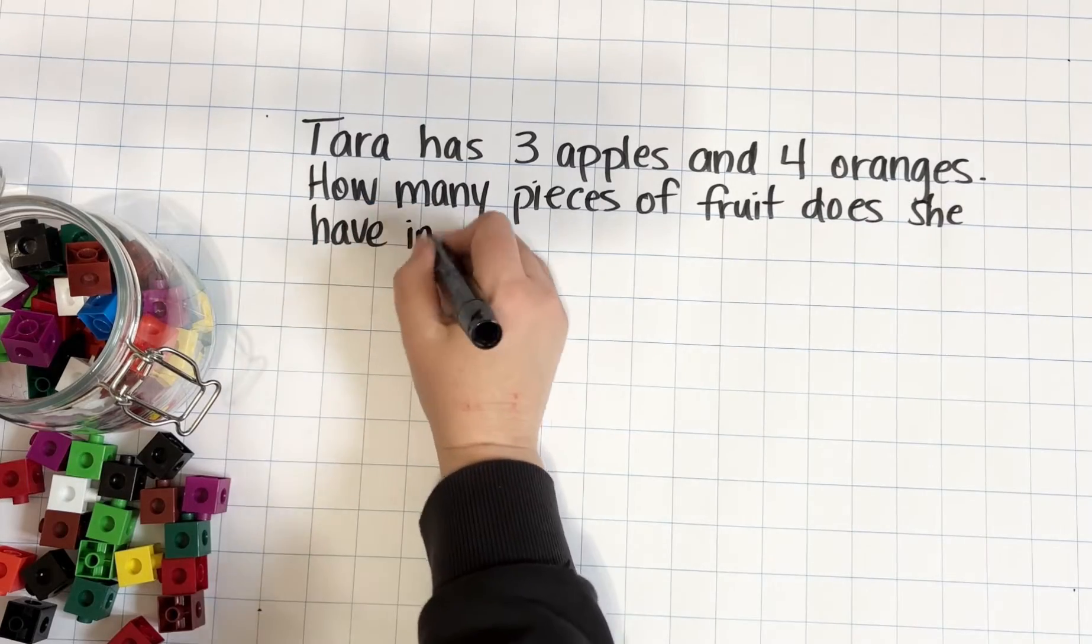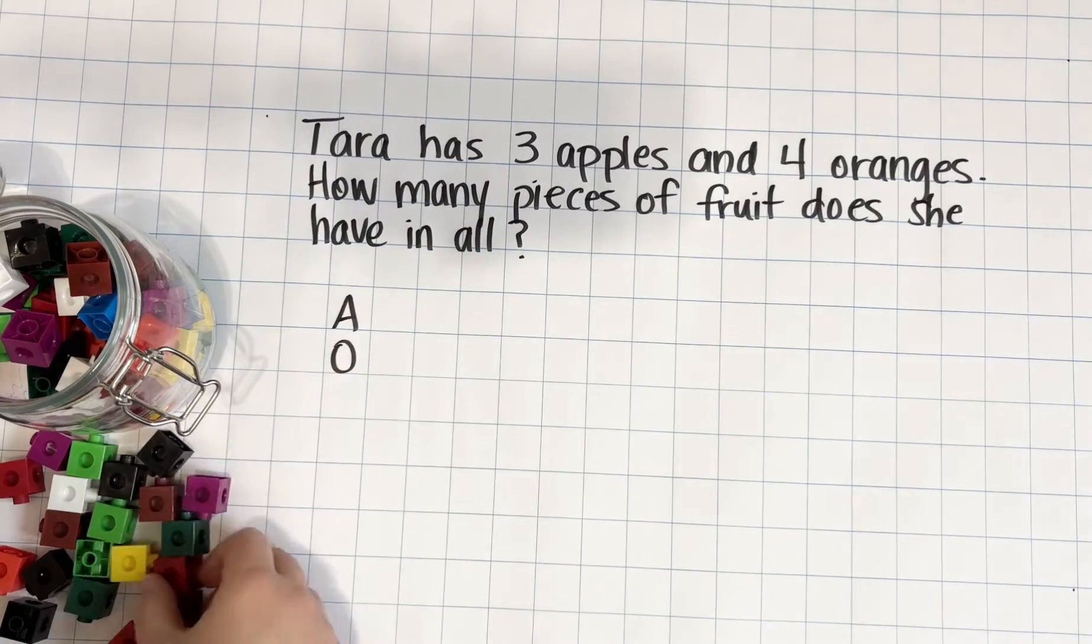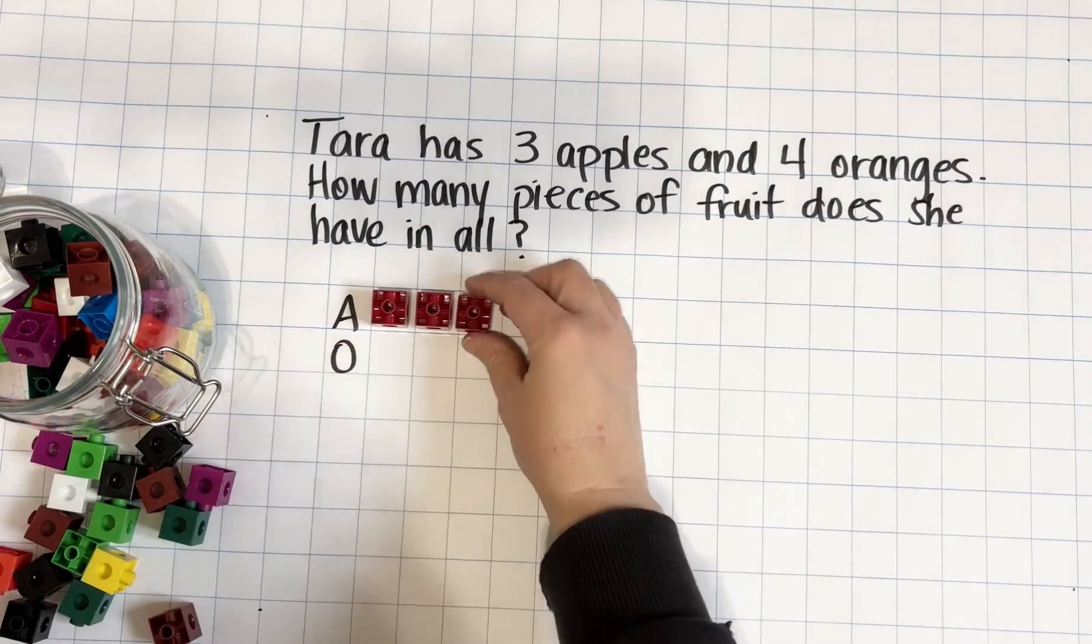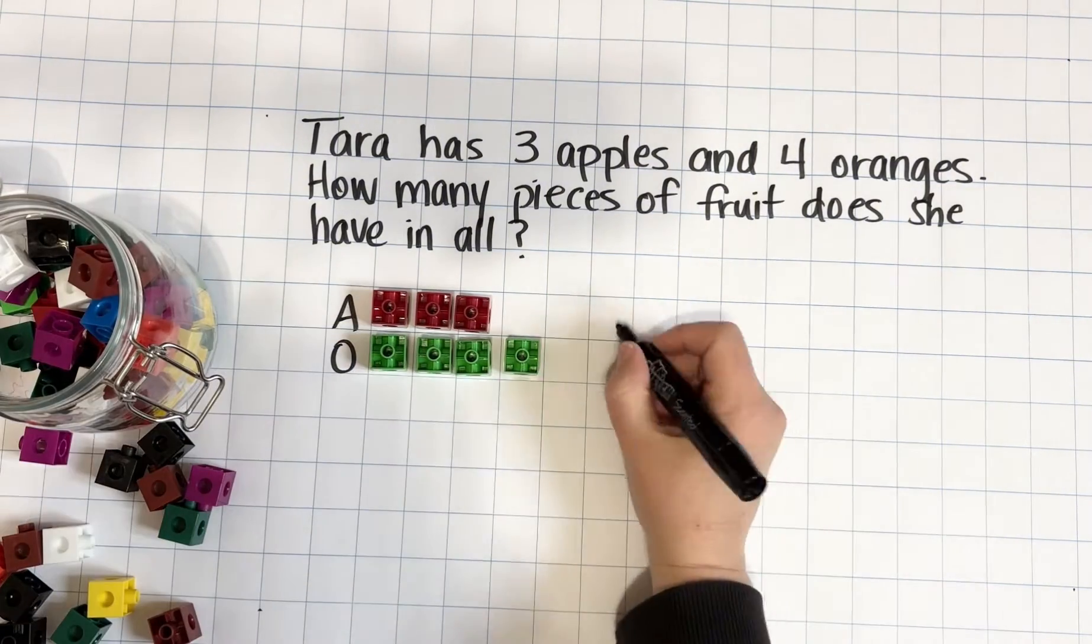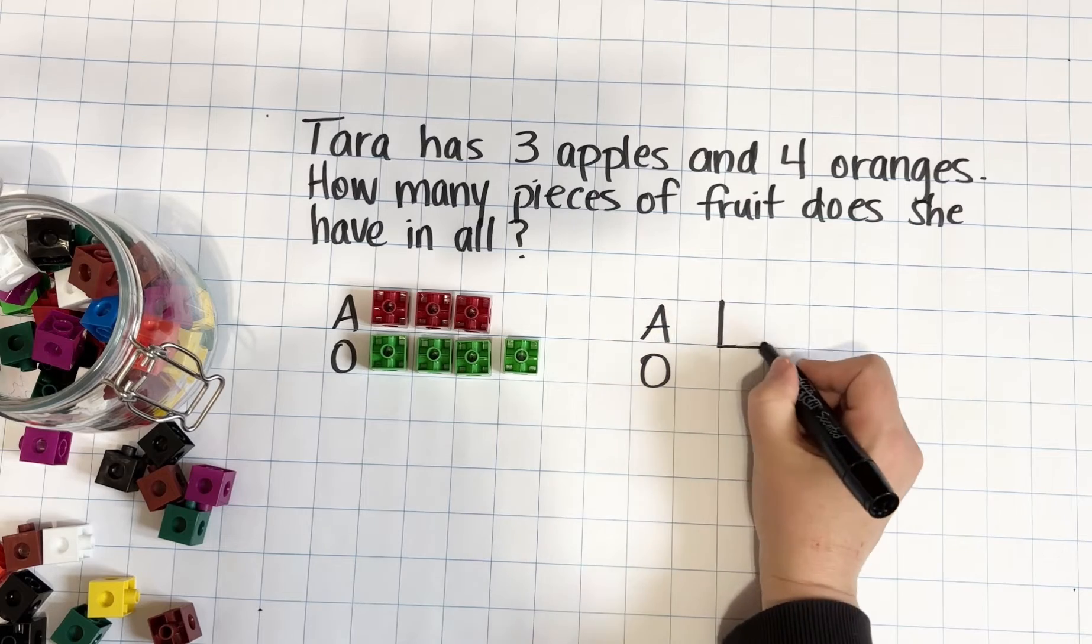For example, this simple problem that students might encounter in kindergarten or grade one could first be represented with concrete manipulatives such as linking cubes, and then we can relate that concrete representation to a bar model.